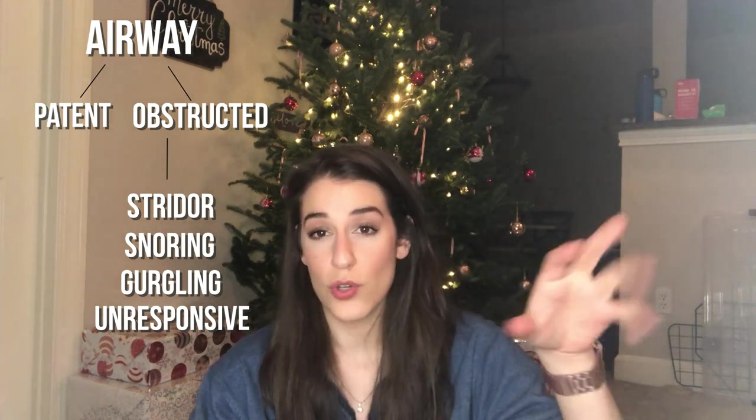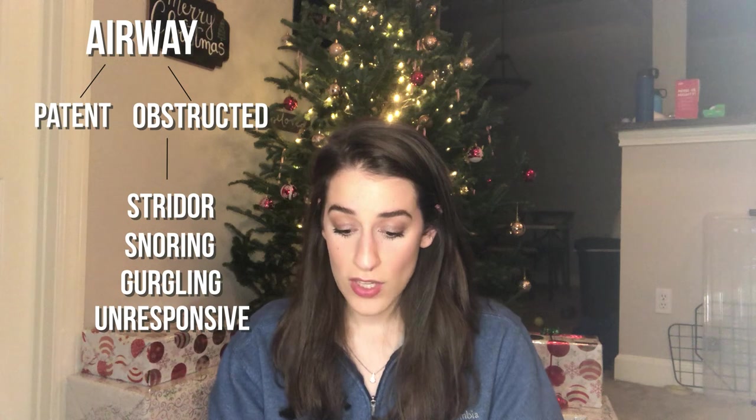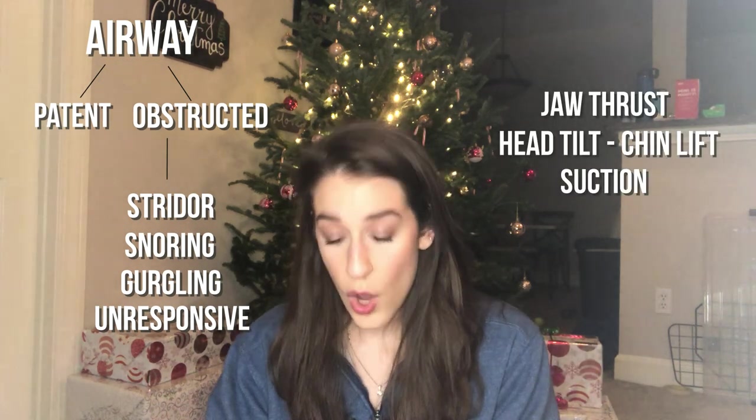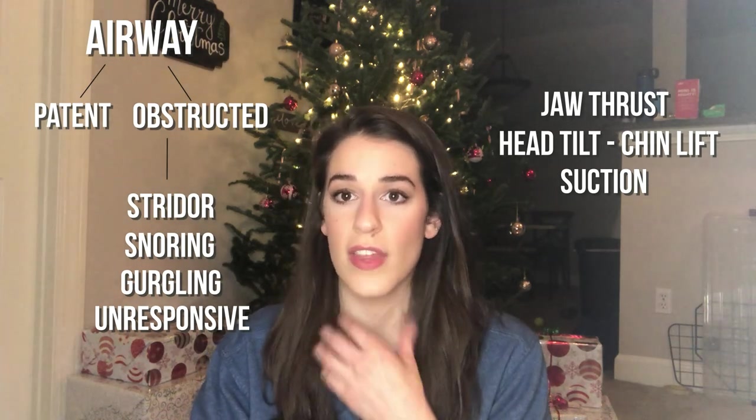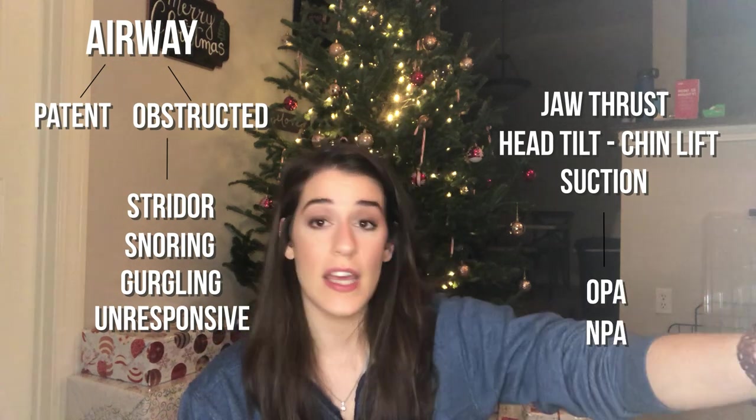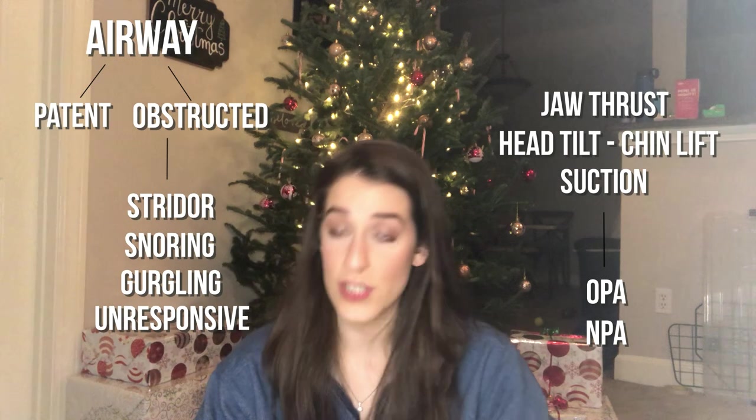So moving on to airway — this can branch into two sections: either the airway is patent and not obstructed, or it is obstructed. Your airway can become obstructed by different methods: internally like anaphylactic shock, your tongue being in the way which would cause snoring, or a foreign object in the throat. The four types are stridor, snoring, gurgling, or unresponsive. If unresponsive, move to CPR. To open the airway you use jaw thrust, head-tilt chin-lift, or suction. Then you can place an OPA or NPA.